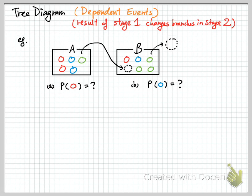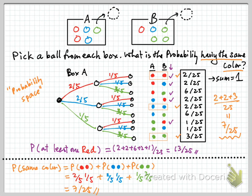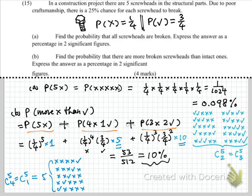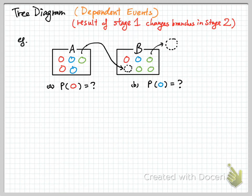So let's take a look at this example. Now, these two boxes are just the same as before, only we have a different game. In this game, we pick one ball at random from A, put it into box B, mix them together, and then pick another one from box B.